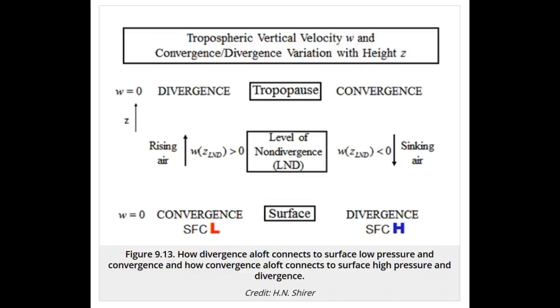Putting these pieces together, we see that if we have convergence at Earth's surface, which occurs in low-pressure areas for reasons we will see in lesson 10, then at the tropopause there is divergence. In between the two surfaces, the velocity is upward, that is, w is positive.